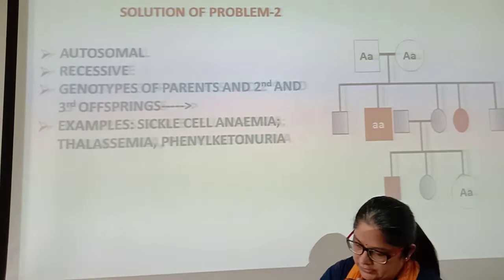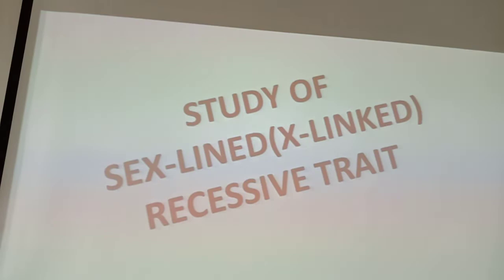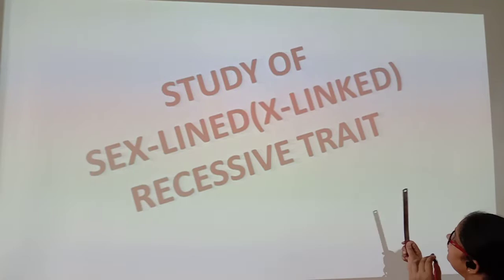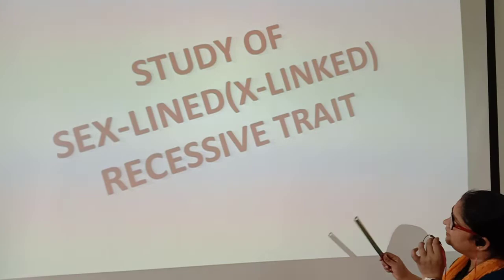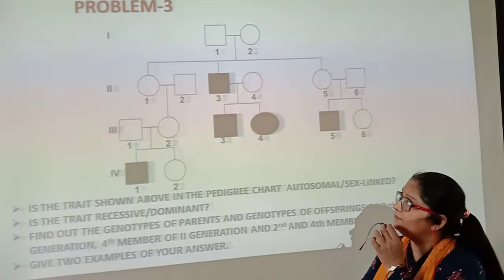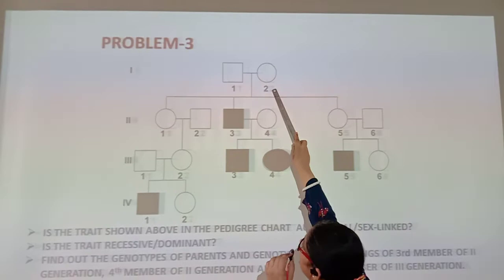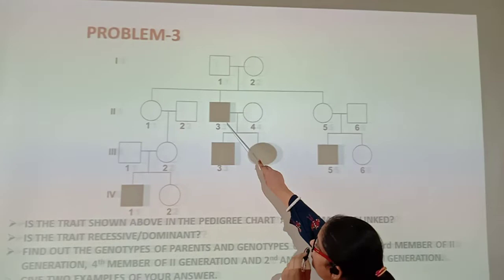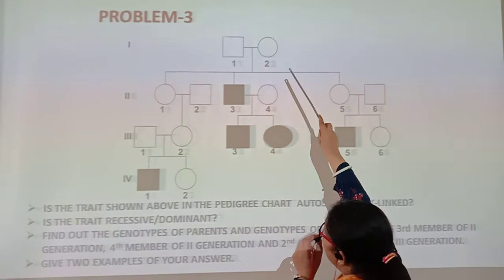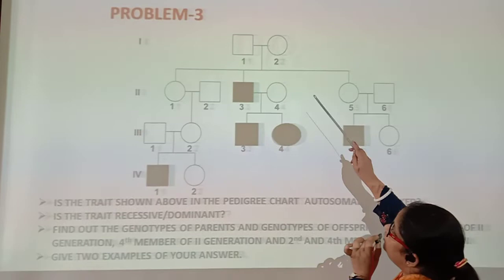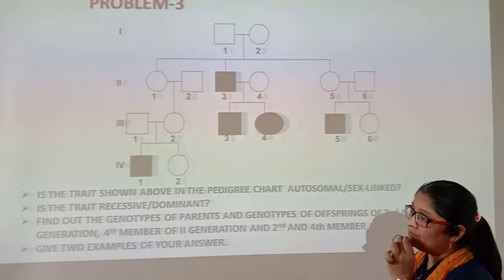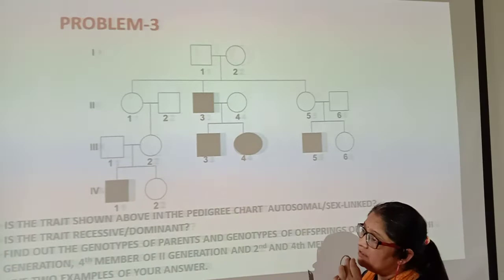Next is the study of sex-linked, X-linked recessive traits. In your syllabus, only the X-linked recessive trait is given. The gene is present on the X-chromosome. In problem three, parents are normal but the son has got the disorder. How could this happen? It means the mother might be a carrier — the X-chromosome must have a mutated gene. That mutated gene passes to the son because the son receives his X-chromosome from his mother, not from his father.